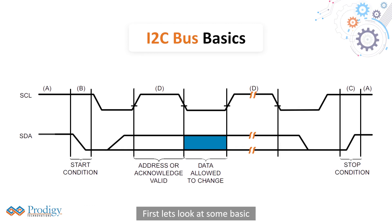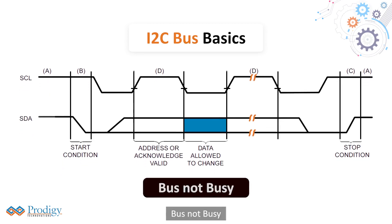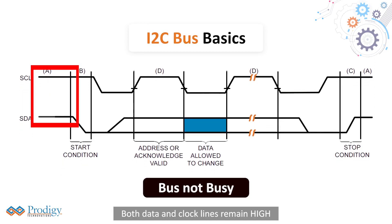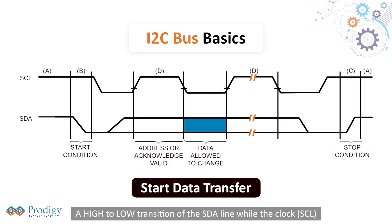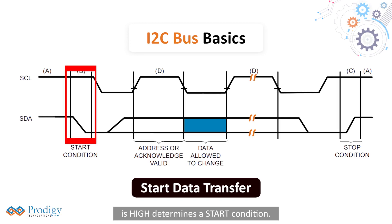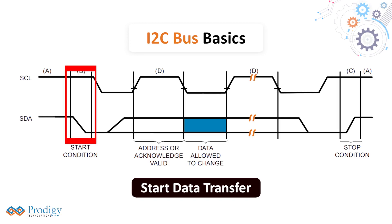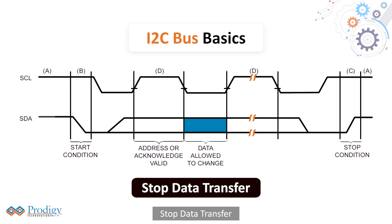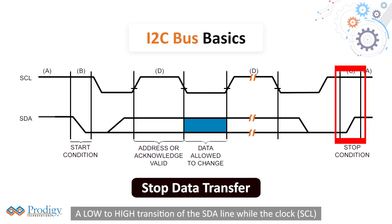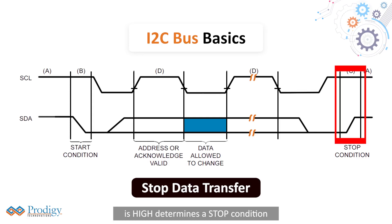Let's look at some basics. Bus not busy: both data and clock lines remain high. Start data transfer: a high-to-low transition of the SDA line while the clock, SCL, is high determines a start condition. All commands must be preceded by a start condition. Stop data transfer: a low-to-high transition of the SDA line while the clock, SCL, is high determines a stop condition. All operations must be ended with a stop condition.